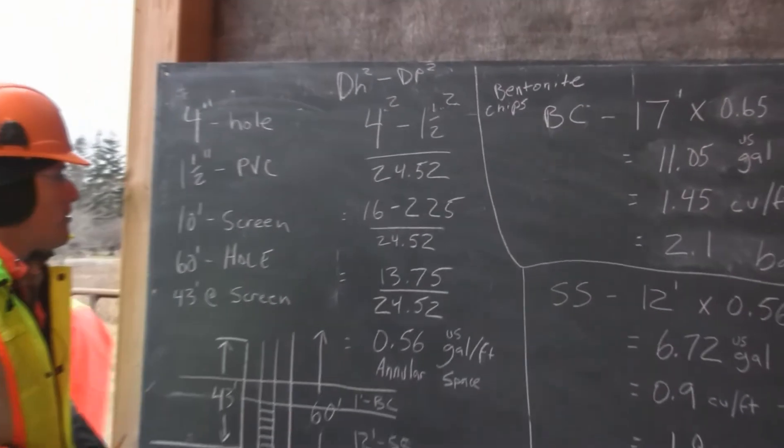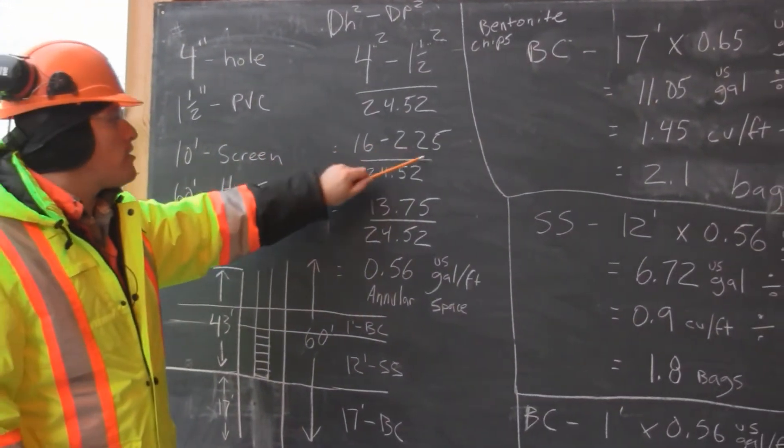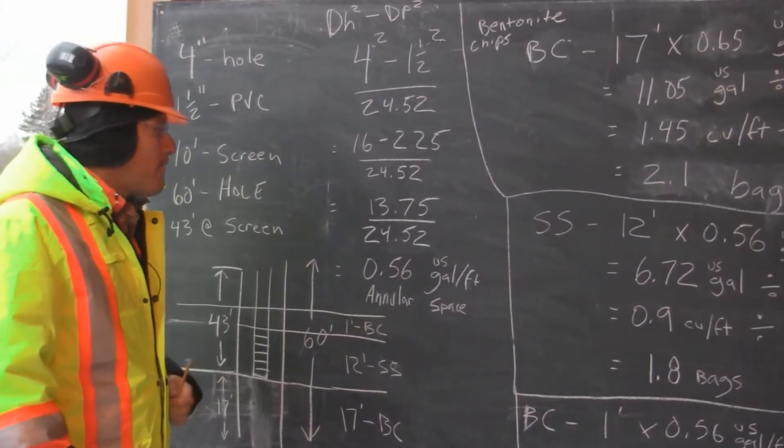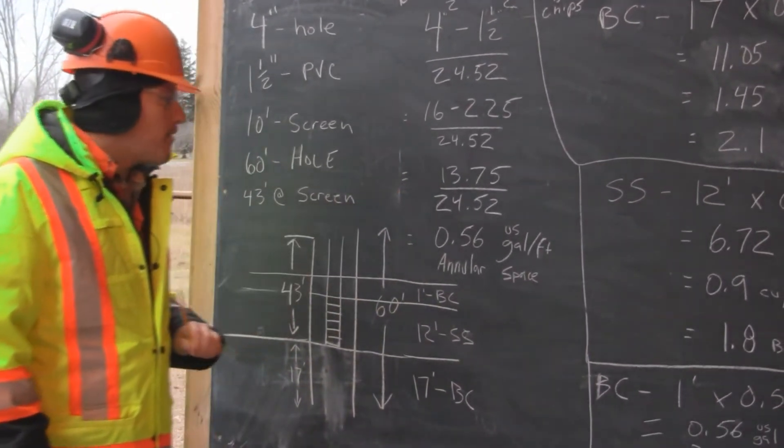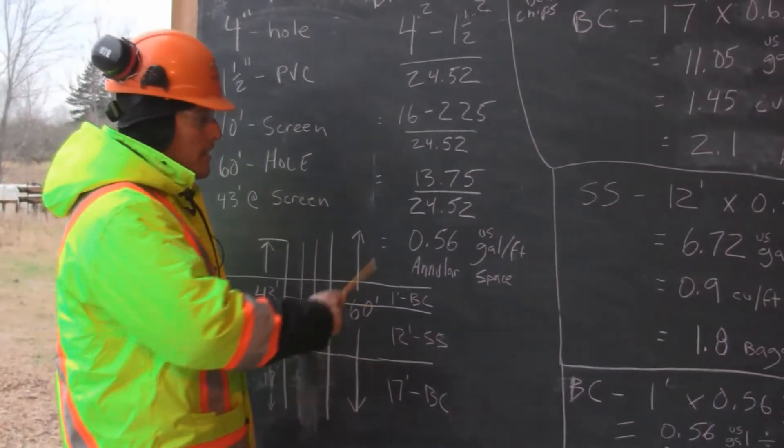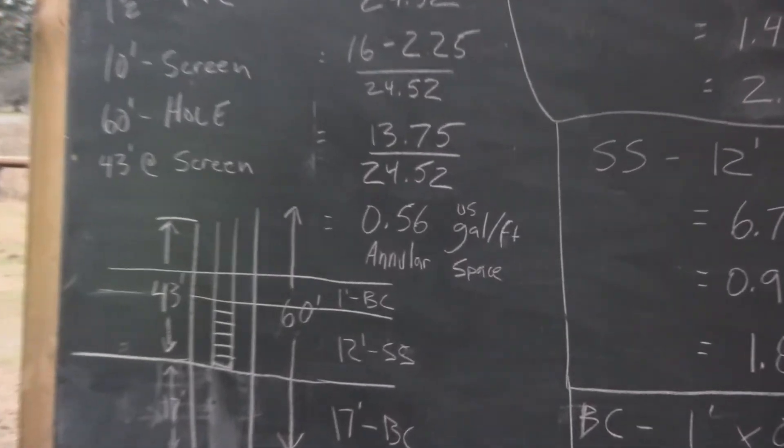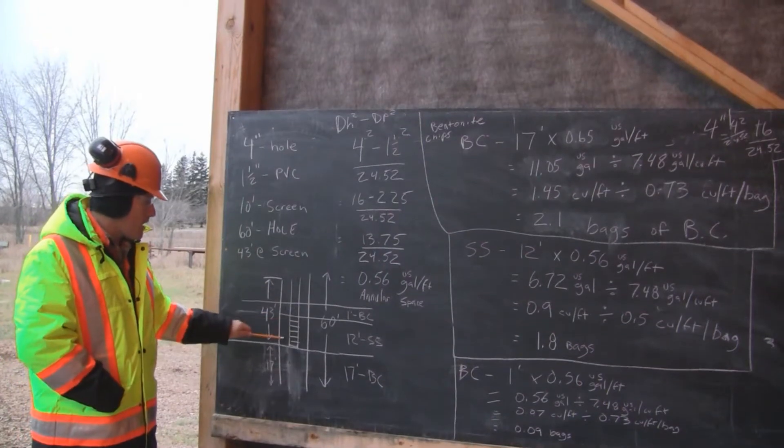This gives us 16 minus 2.25 over 24.52, resulting in 13.75 over 24.52, and a total of 0.56 US gallons per foot of annular space located here.